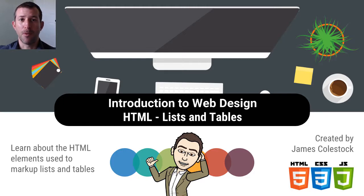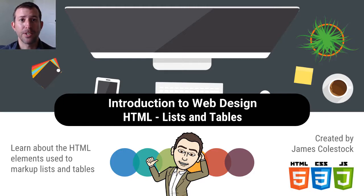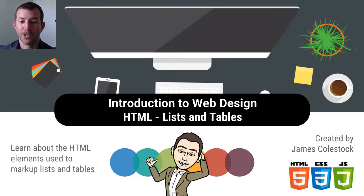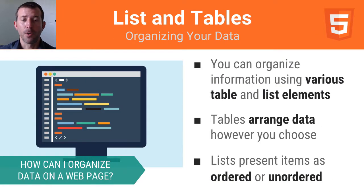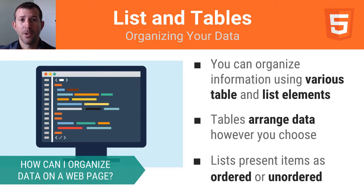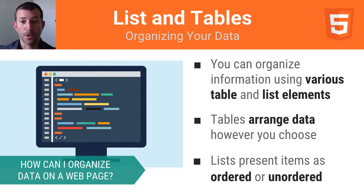We're going to continue our study of HTML by looking at lists and tables, two different things that you can use to put structured data on a web page. You can organize information a lot of different ways, and lists and tables are just two different ways to do that. Tables allow you to arrange data in a two-dimensional grid, and lists allow you to present items as either ordered or unordered.